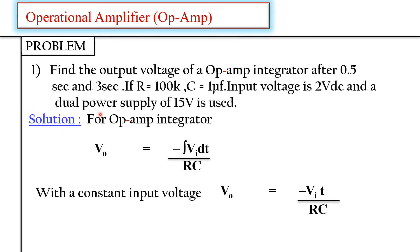If a problem comes, it is typically for 3 marks. Let us solve a problem: find the output voltage of an op-amp integrator after 0.5 seconds and 3 seconds, given R = 100 kΩ, C = 1 µF, input voltage VI = 2 V DC, and a dual power supply of ±15 V.